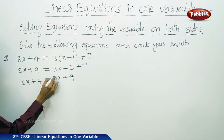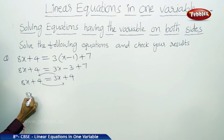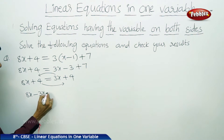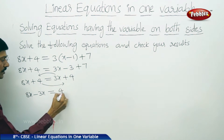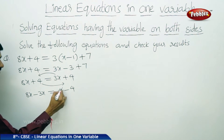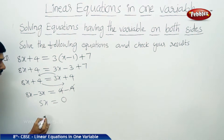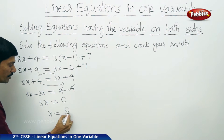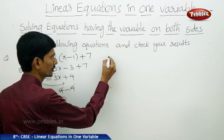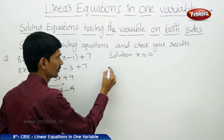Now we transpose 3x to LHS and 4 to RHS. Plus 3x becomes minus 3x on LHS, and plus 4 minus 4 gets cancelled. So 8x minus 3x is 5x equals to 0. Therefore x equals to 0 divided by 5, which equals 0. The solution is x equals to 0.